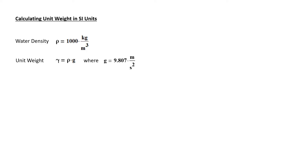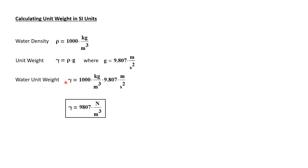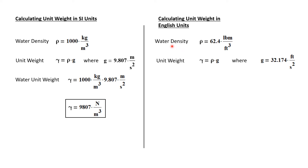Let's look at another common problem: calculating unit weights, starting with SI units. Using water as an example, we take the density of water to be 1000 kg/m³, noting that density is mass per unit volume. Unit weight, on the other hand, is weight per unit volume, and we calculate unit weight by multiplying density times the acceleration of gravity. In this example, unit weight is 1000 kg/m³ times 9.807 m/s², giving a unit weight gamma of 9807 Newtons per cubic meter, since kg·m/s² is a Newton.